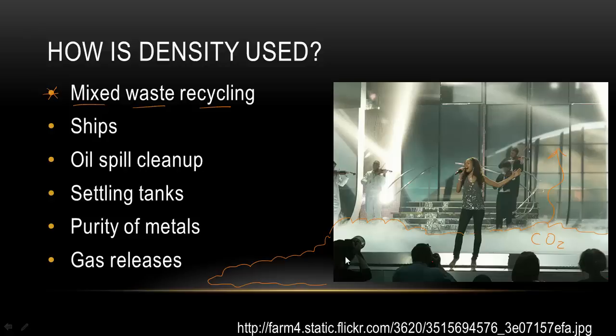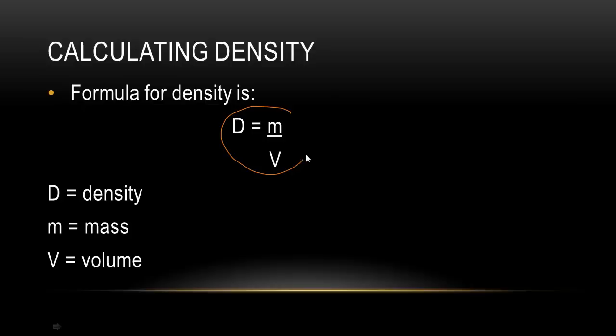We calculate density using a really simple formula: D for density is equal to the mass divided by the volume. Make sure you write this formula down.